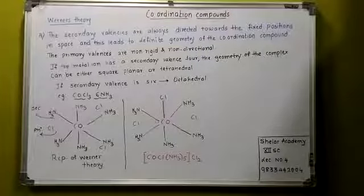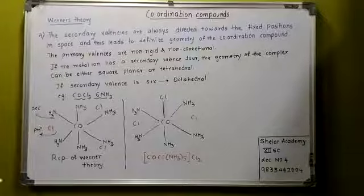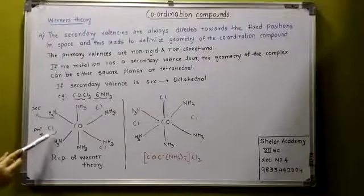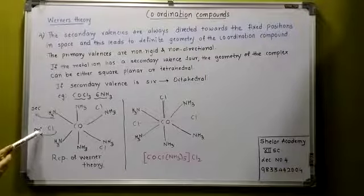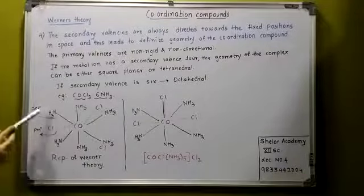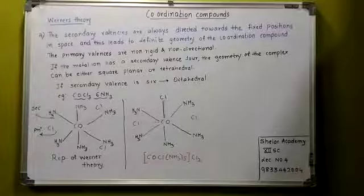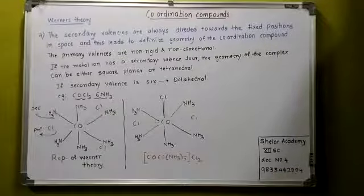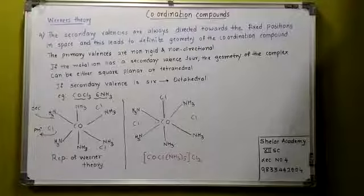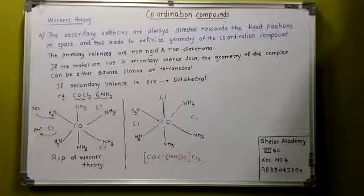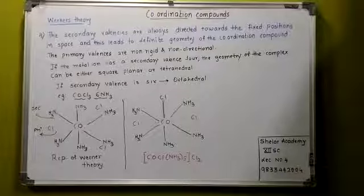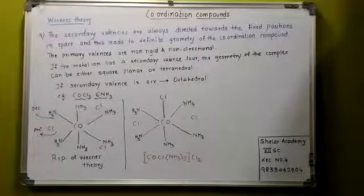Let us have the first structure that is CoCl3·6NH3. You can see this structure. In this, cobalt has primary valence equal to the oxidation state, which is 3. And the secondary valence is represented by a thick line. Primary valence is denoted by a dotted line. Now if the complex, all the 6 secondary valences are occupied by 6 ammonia molecules - 1, 2, 3, 4, 5, 6. And the Cl ions are bonded to cobalt by the 3 primary valences.